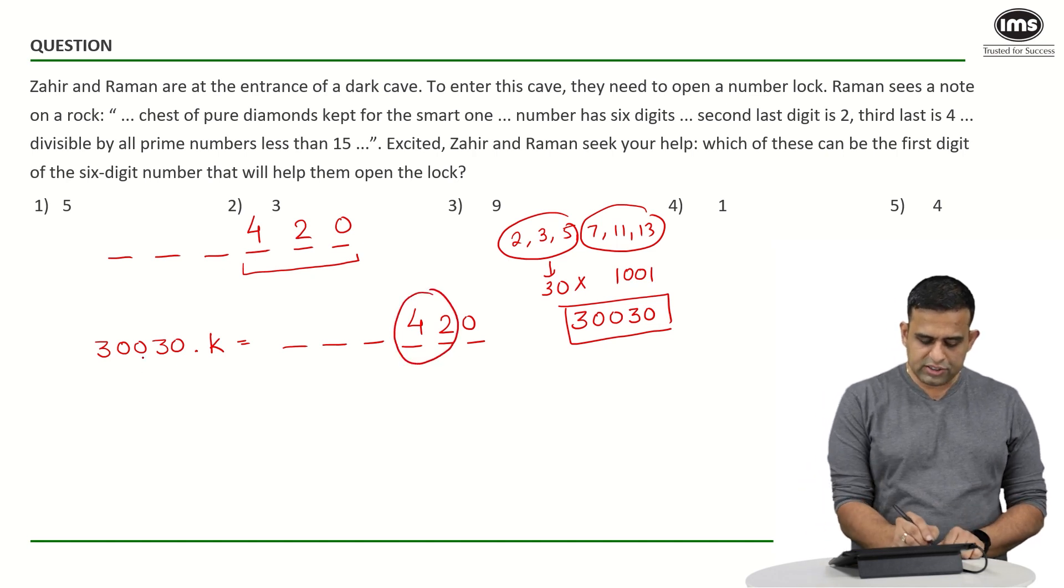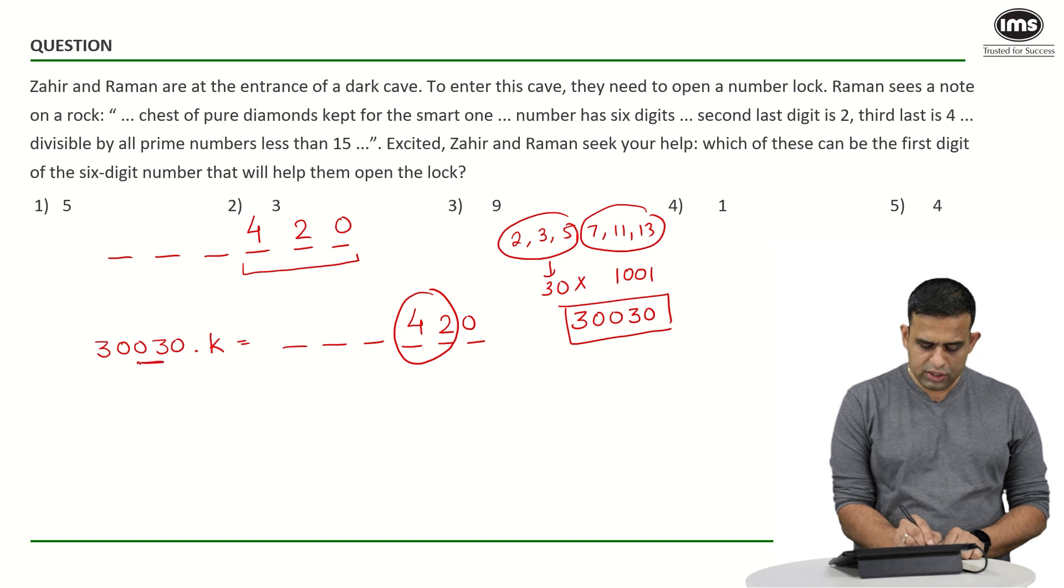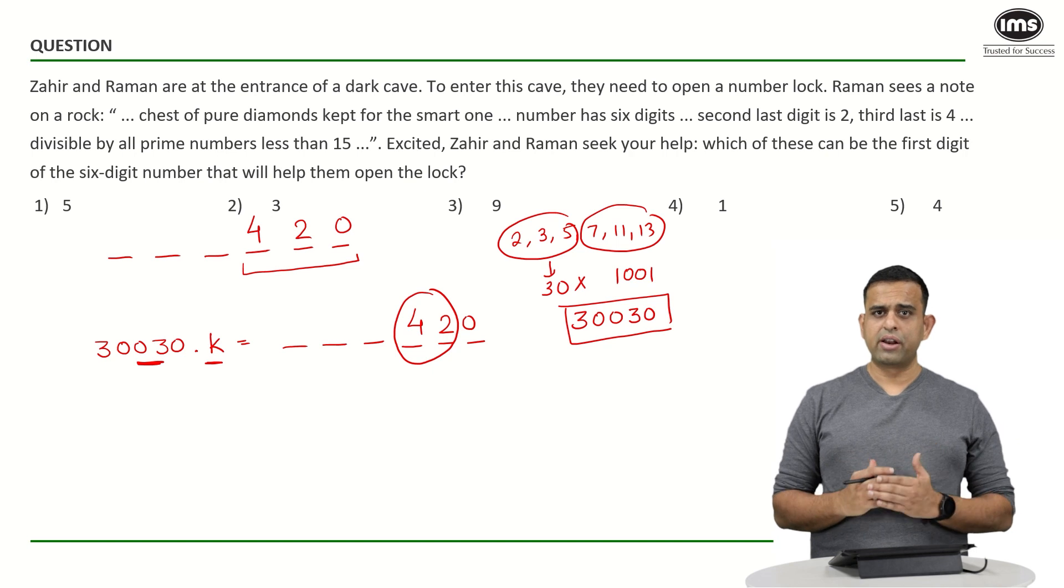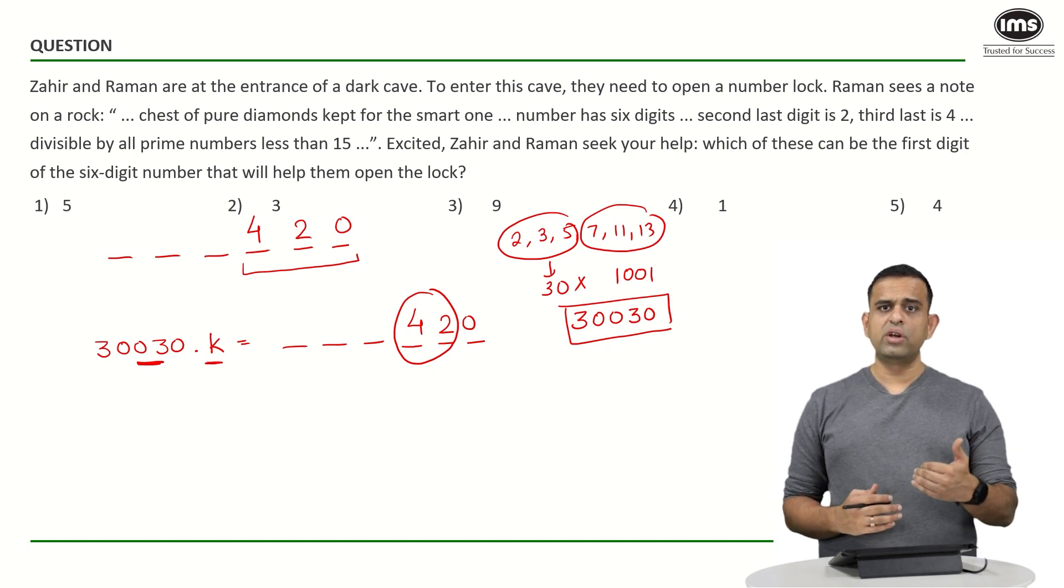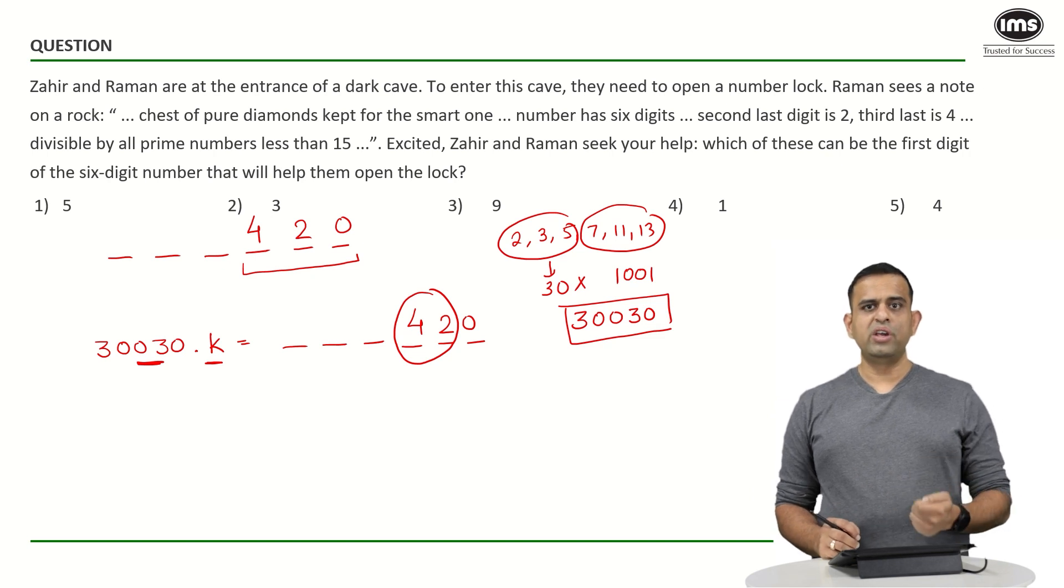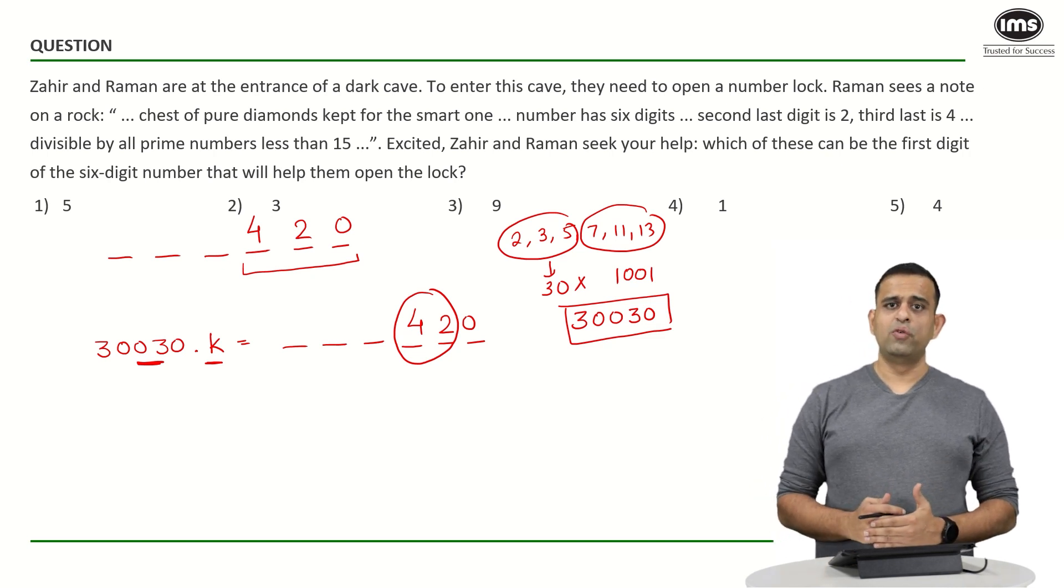Now suppose if I focus on the number 42 because last place happens to be a 0. So what I want is, I want the term 03 into k. So in other words, one can say in simple term without doing hit and trial, what I want is 3 into k should end with the number 42.